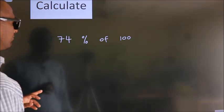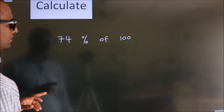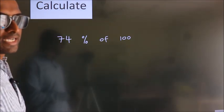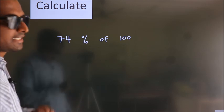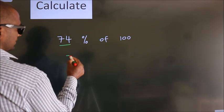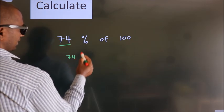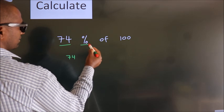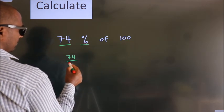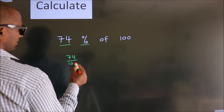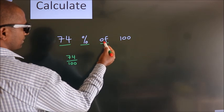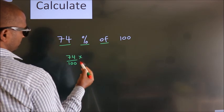Calculate 74% of 100. How do we calculate this? This number as it is we write. In place of the percentage, we divide by 100. In place of 'of', we write 'into'.